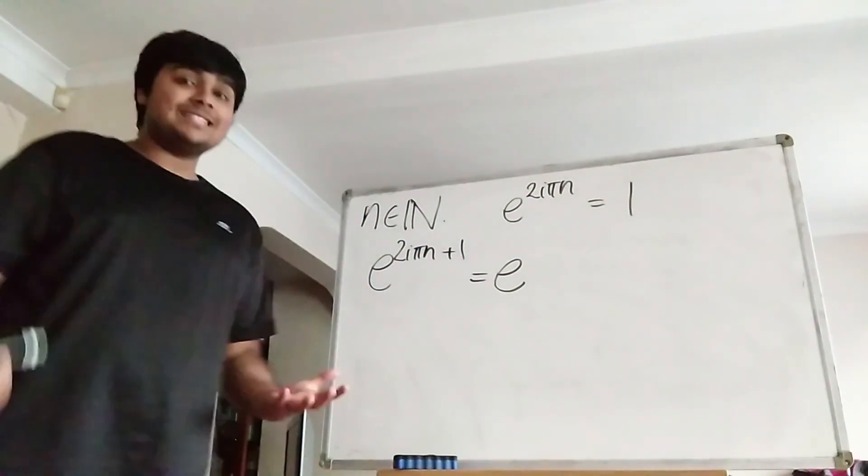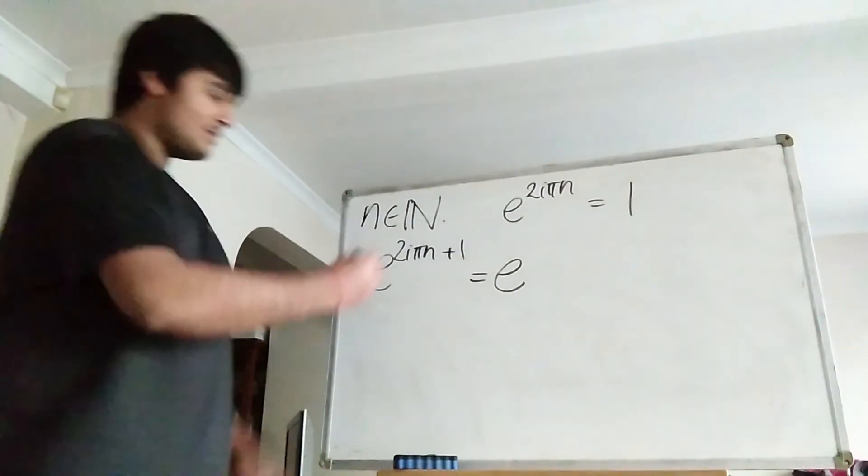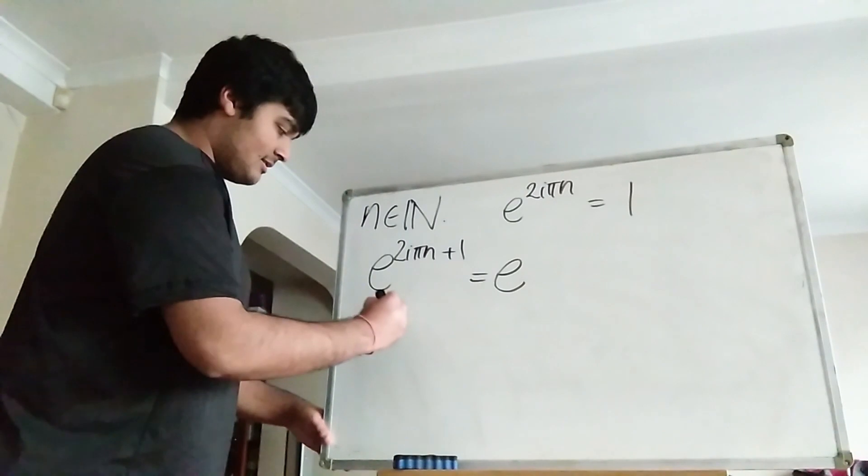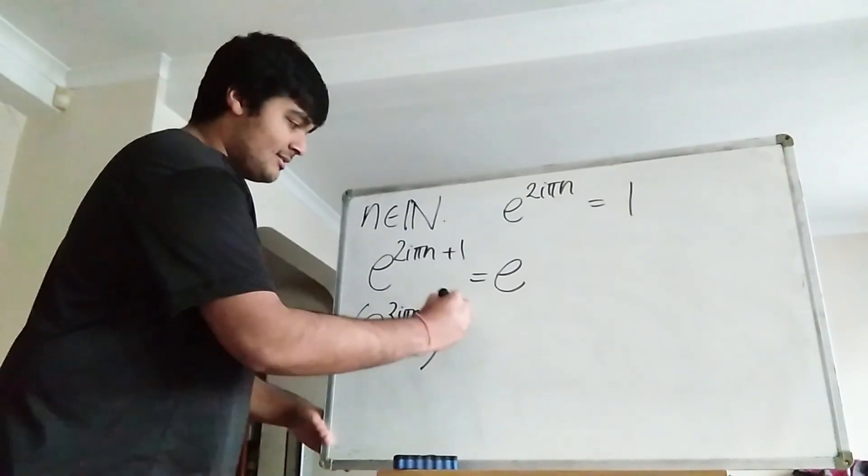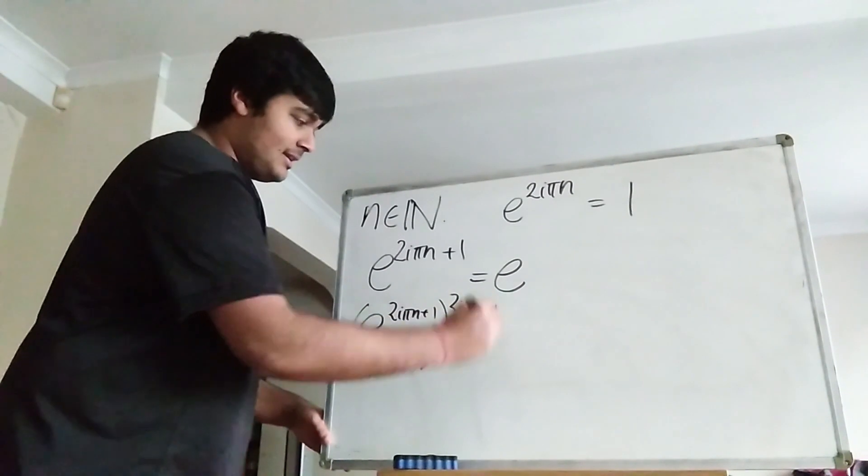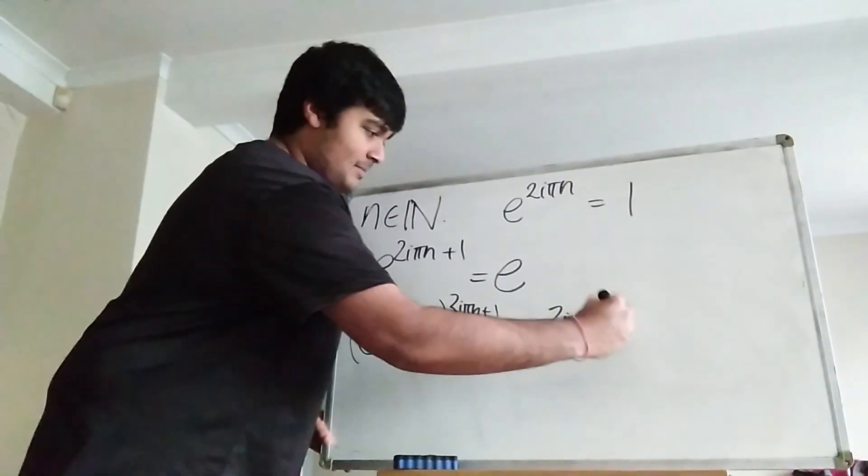And now what I'm going to do is raise both sides to the 2i pi n plus 1 power. Okay, so on the left hand side I get e to the 2i pi n plus 1 raised to the 2i pi n plus 1, and on the right hand side I get e to the 2i pi n plus 1.